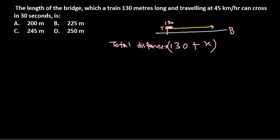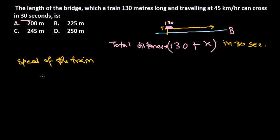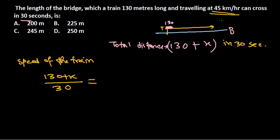This total distance is covered in 30 seconds. So the speed of the train equals the distance covered — that is 130 plus X — divided by 30. We already know the speed of the train is 45 kilometers per hour, so we set that equal to (130 + X) / 30.